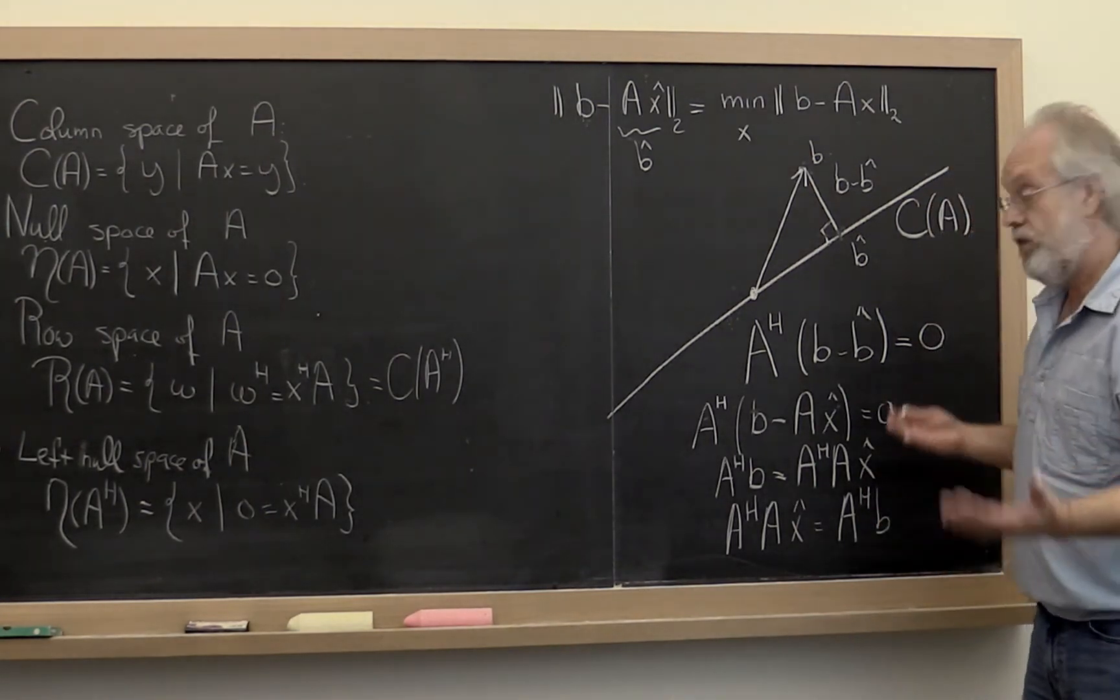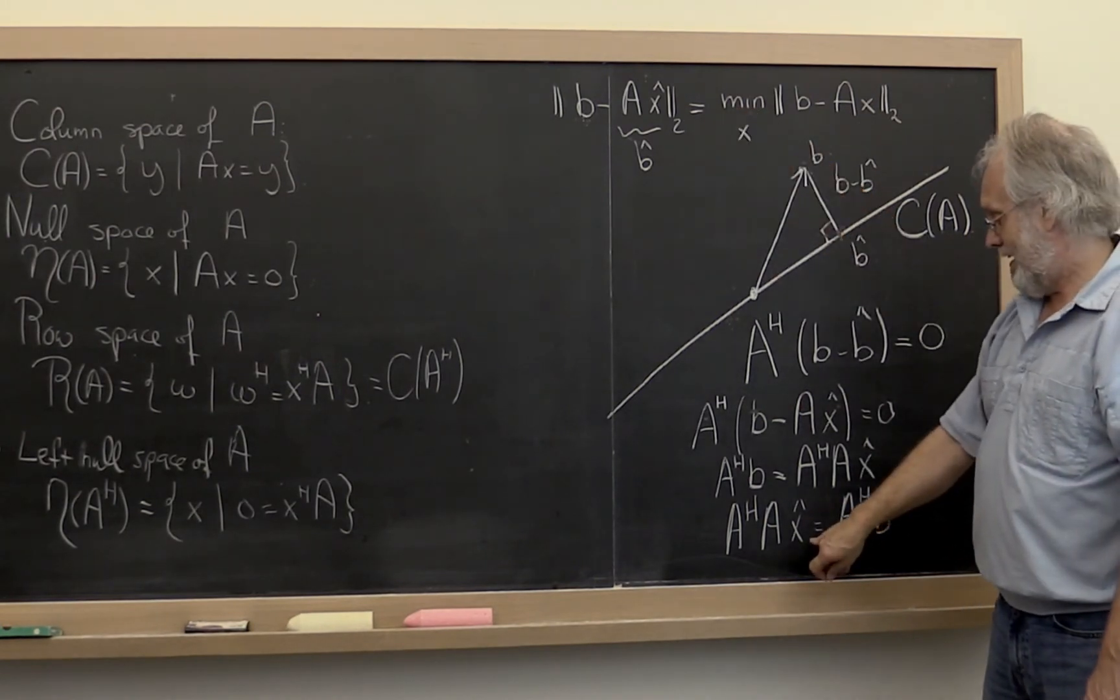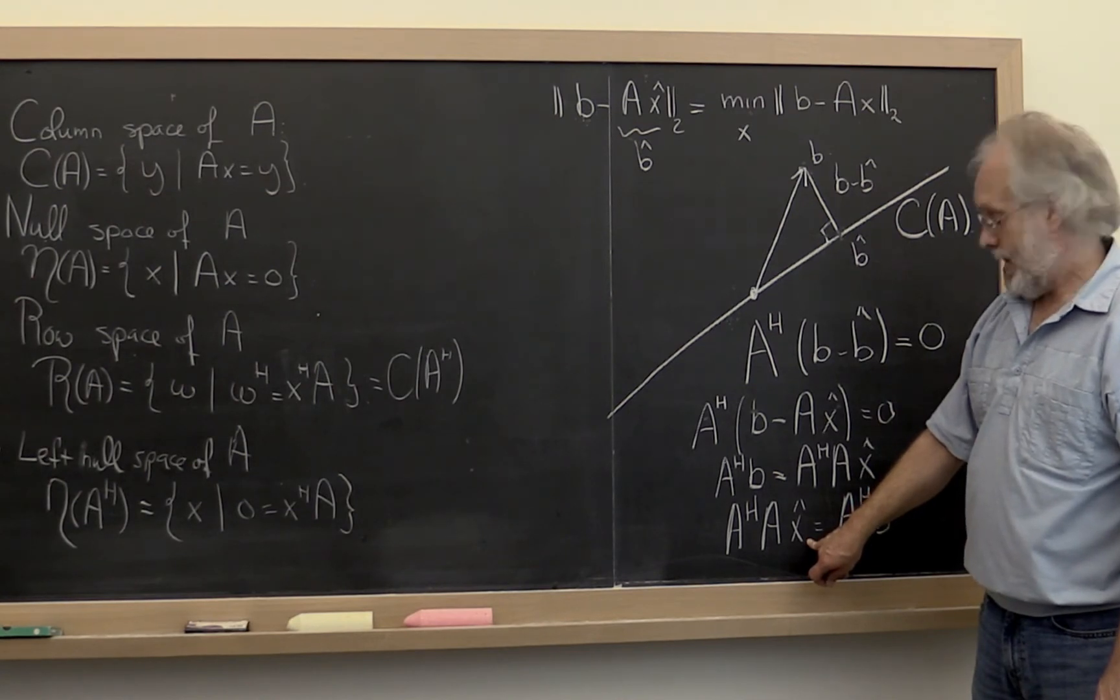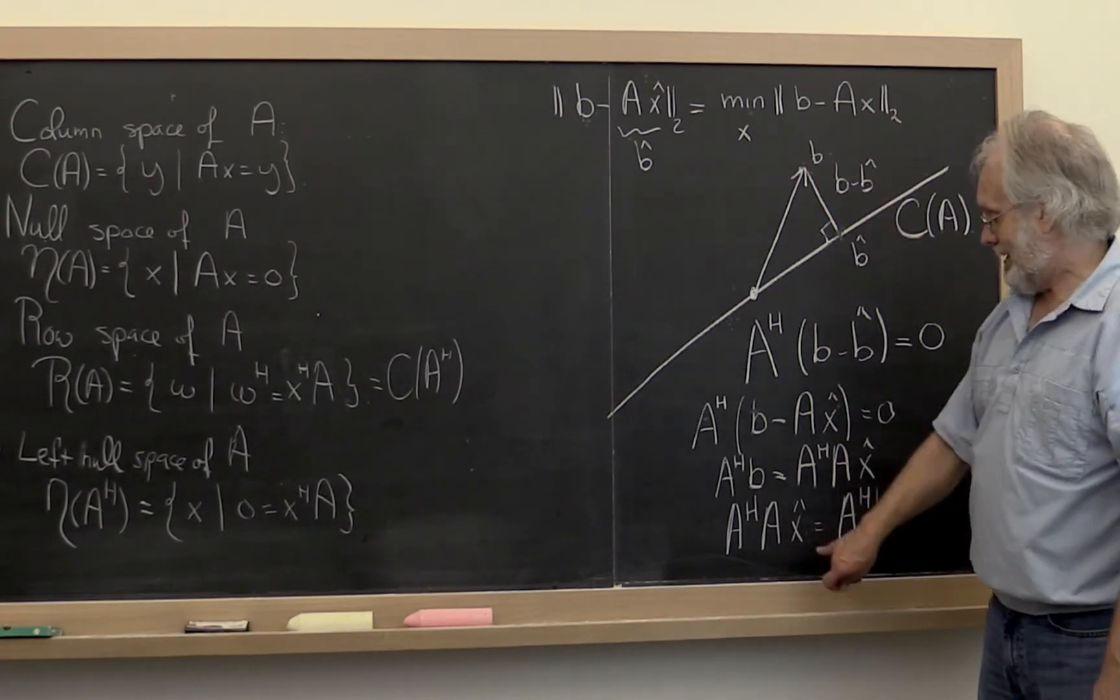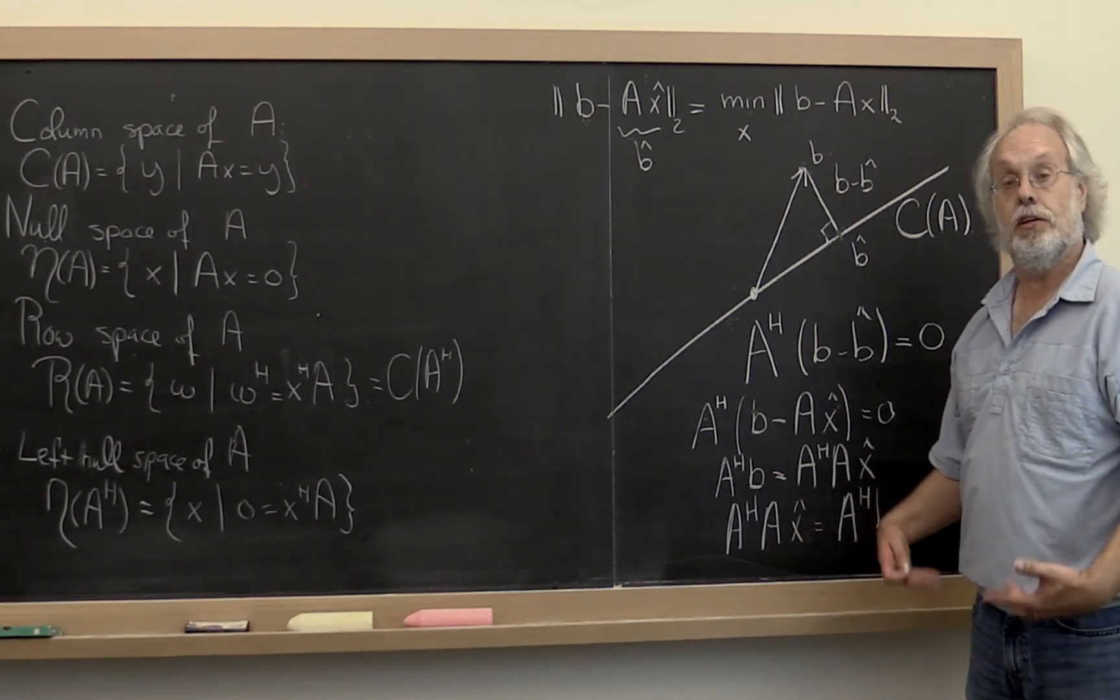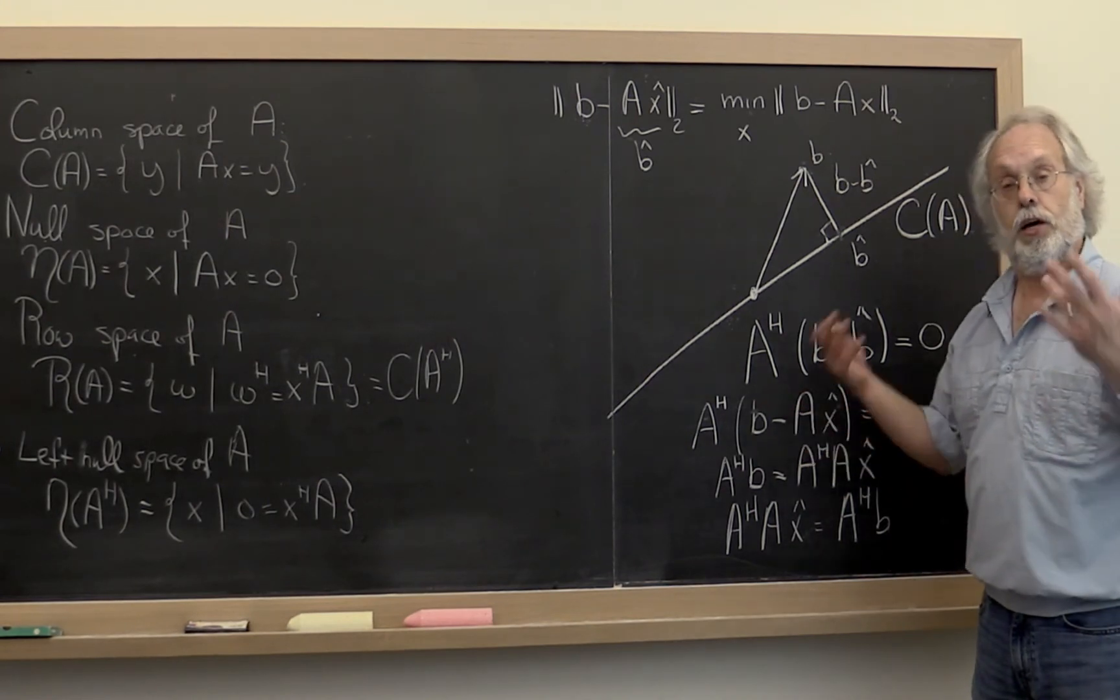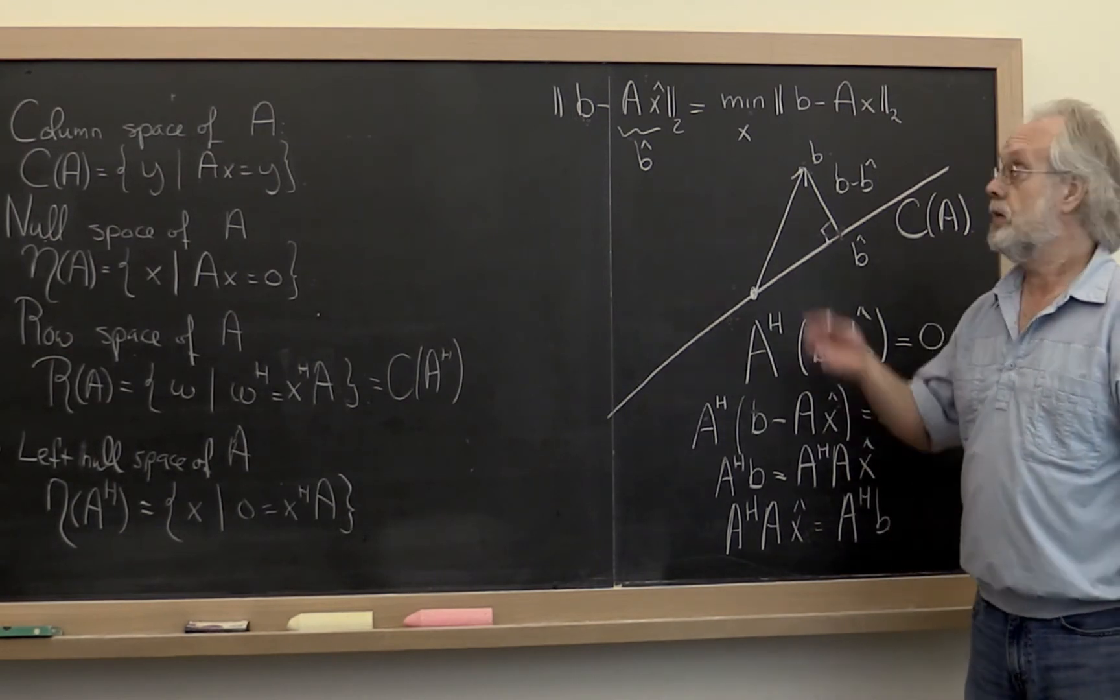So what we find is that the vector that minimizes this must satisfy this linear equation. This particular equation is known as the normal equation. And if you create this, if you create this linear system and then you solve it, then you're using the method of normal equations. And bingo! We have our first way of solving the linearly squares problem.